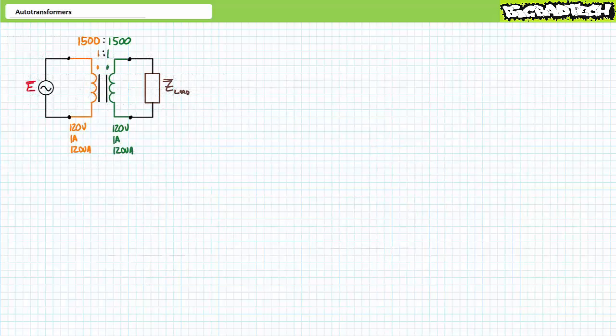Perhaps the easiest way to visualize a step-down auto transformer is to first imagine a traditional one-to-one transformer with primary and secondary windings having identical turn ratios — let's say 1500 turns in the primary and 1500 turns in the secondary. Let's say this traditional transformer has a 120 volt rated voltage, a one-amp rated current, a power rating of 120 volt amperes, and weighs eight pounds.